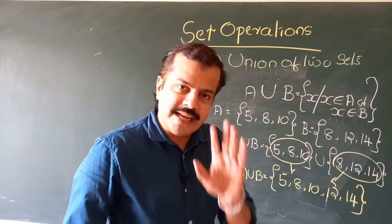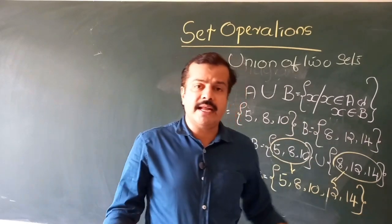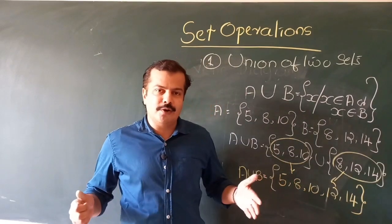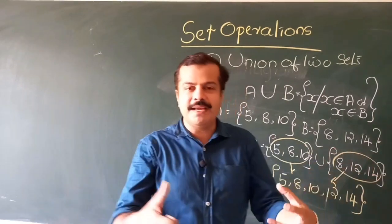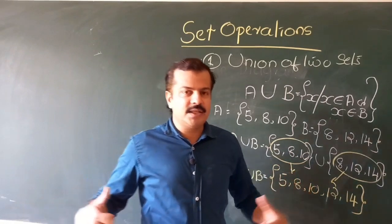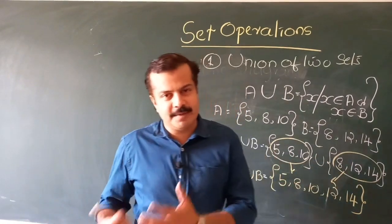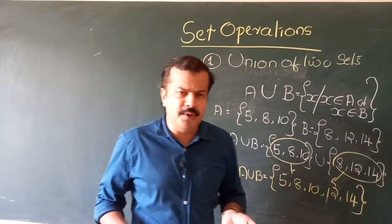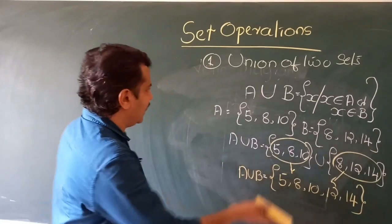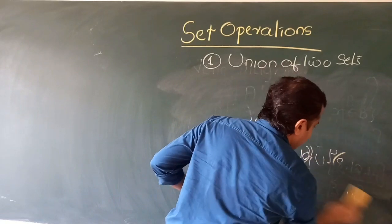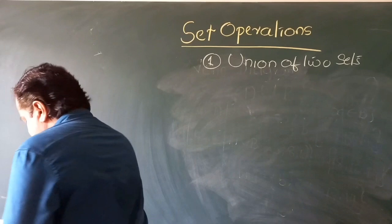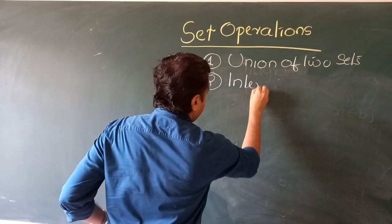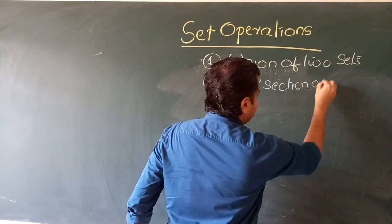That is the implication of the union of sets, and it can be extended to any number of sets. For example, A union B union C means all the elements of set A, along with those of set B and set C. Now let us extend our analysis to look at the second important operation for today: the intersection of sets.